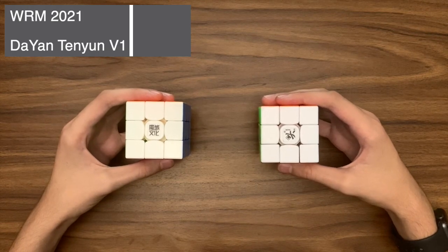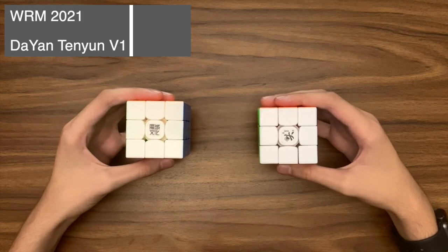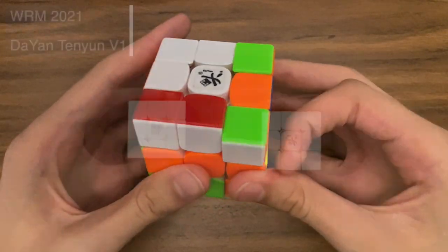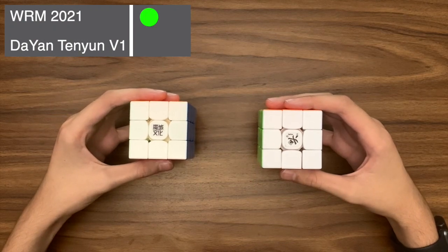Starting with the Moyu WRM 2021 versus the Diane Tangian version one. Performance: Although I prefer the turning on the Tangian, I have to say that it is too unstable. So I'm going to have to give it to the WRM.